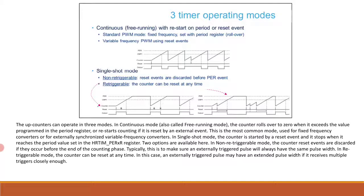In single shot mode, the counter is started by a reset event and stops when it reaches the period value set in the HRTIM_PRxR register. Two options are available: in non-retriggerable mode, counter reset events are discarded if they occur before the end of the counting phase — this ensures an externally triggered pulse always has the same pulse width. In retriggerable mode, the counter can be reset at any time; an externally triggered pulse may have an extended pulse width if it receives multiple triggers closely enough.